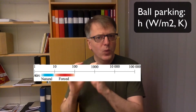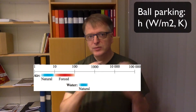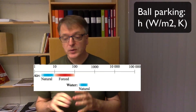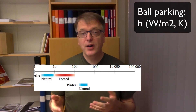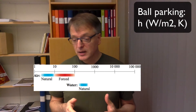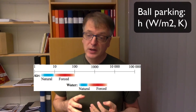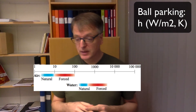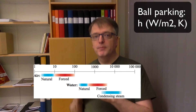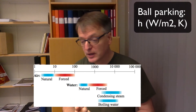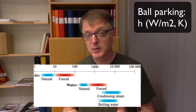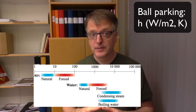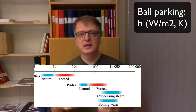If you have water instead, it's a better conductor, so you get much better heat transfer coefficients than for air. For natural convection of water, you typically have a few hundred watts per square meter per kelvin. For forced convection of water, you can have from several hundred up to several thousand. If you have condensing or boiling water, you can have even more — from a few thousand up to perhaps 10,000, 20,000, or 30,000 watts per square meter per kelvin.